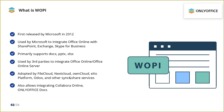WOPI is used by Microsoft to integrate Office Online with other solutions like SharePoint, Exchange, and Skype for Business. The protocol was primarily intended to support Microsoft Office formats. Since its release, WOPI has been adopted by many applications outside of Microsoft, including content management systems like FileCloud, Nextcloud, OwnCloud. Among office suites that can be embedded using WOPI are Collabora and OnlyOffice Docs.